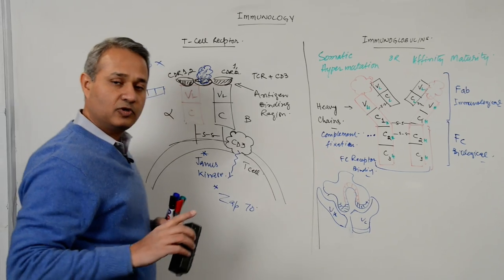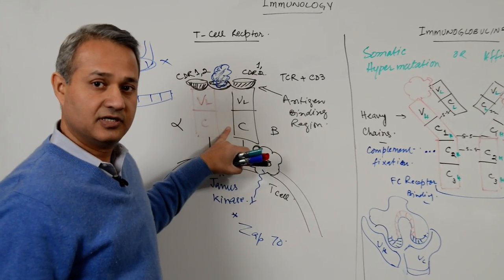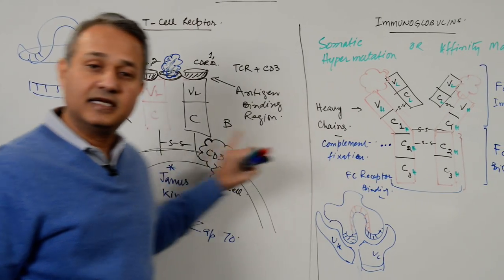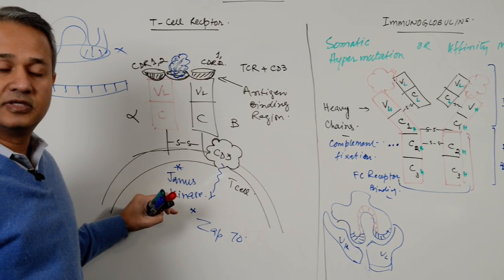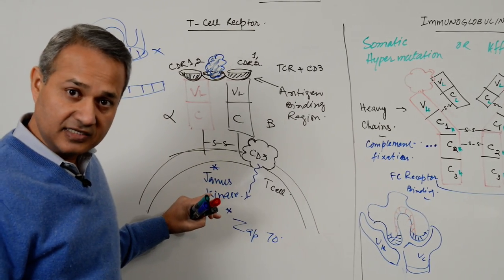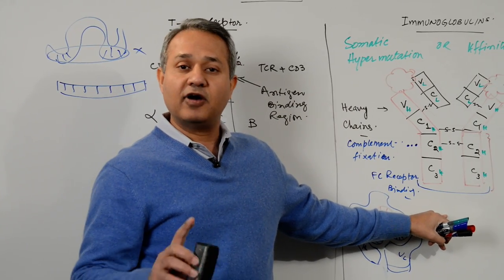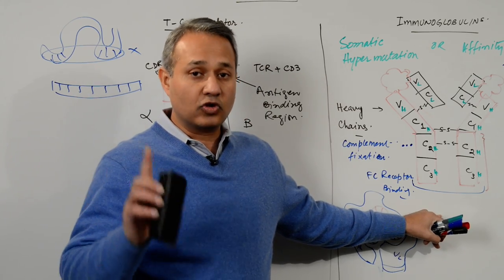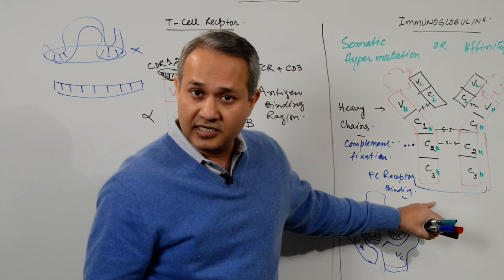One more concept before we go: the T cell receptor differs from immunoglobulin in that T cell receptors are always anchored on the cell surface, never found in free state. Immunoglobulins, on the other hand, can be found on the cell surface or in free state, more commonly in the free state than on the cell surface.